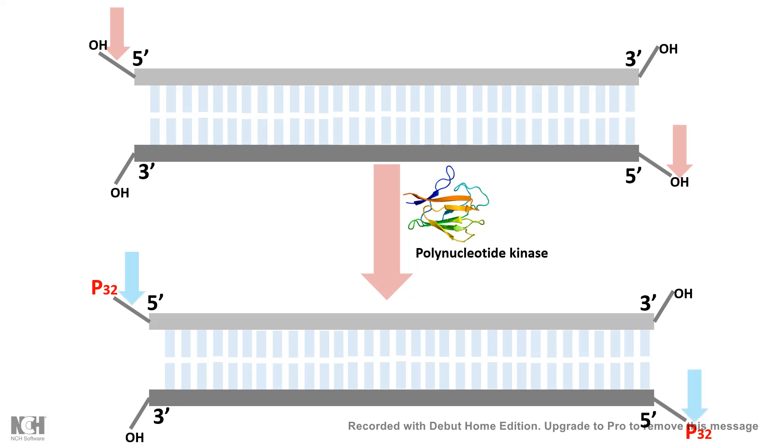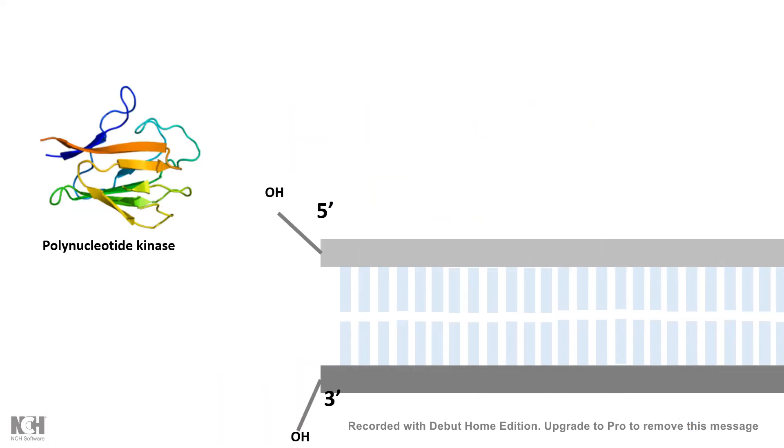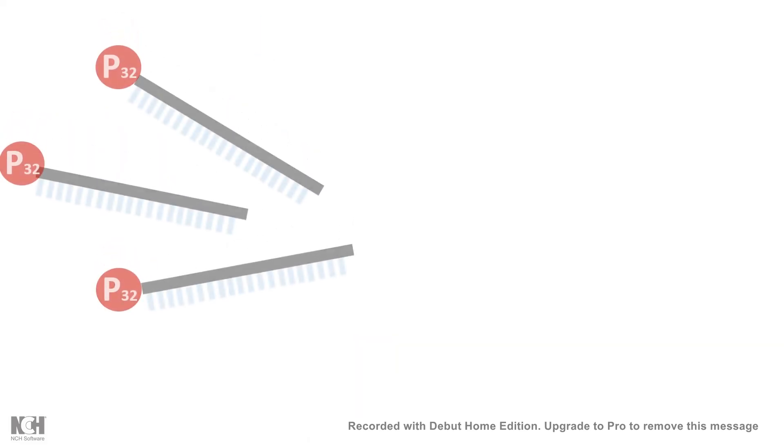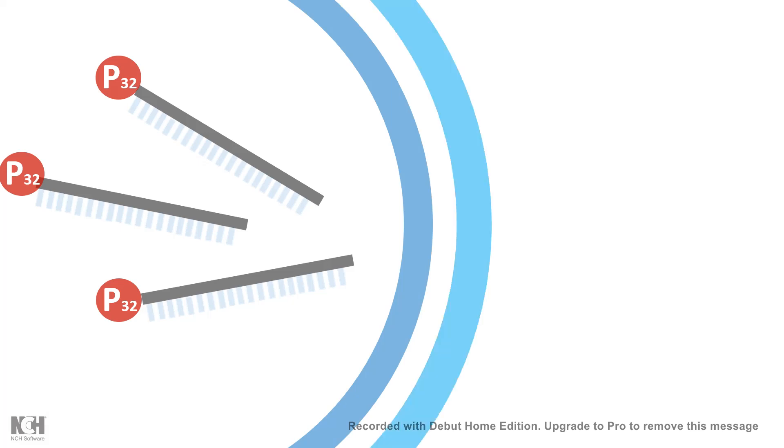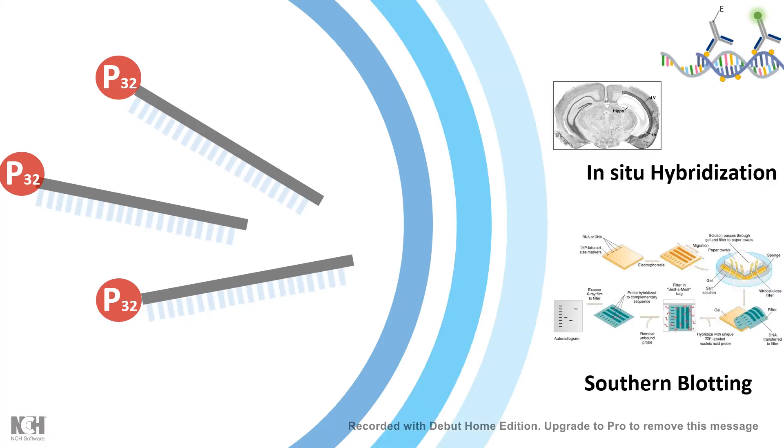Now, once it is labeled, when we provide radiolabeled nucleotide, radiolabeled ATP, polynucleotide kinase incorporates the radiolabel into the phosphate group and puts it in the 5' end. And this strategy could be used in case of southern blotting and in-situ hybridization.